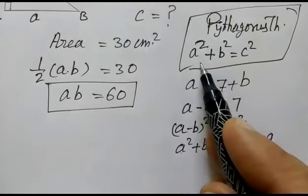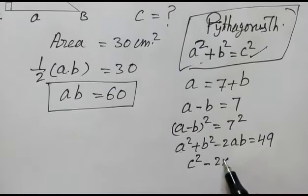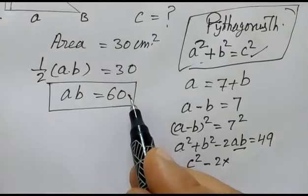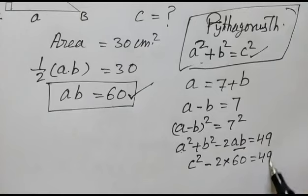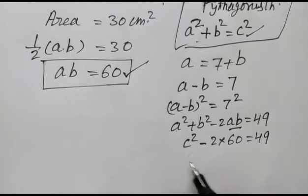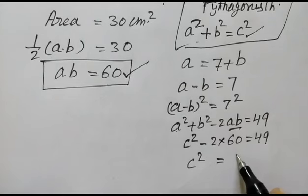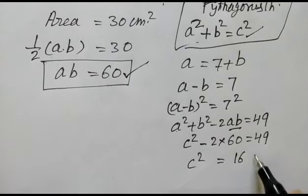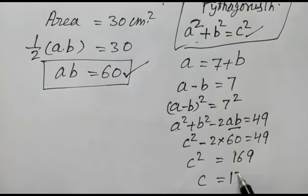As a square plus b square is equal to c square, so c square minus 2 into ab, which is 60, equals 49. Therefore, c square is equal to 169, so c will be equal to 13.